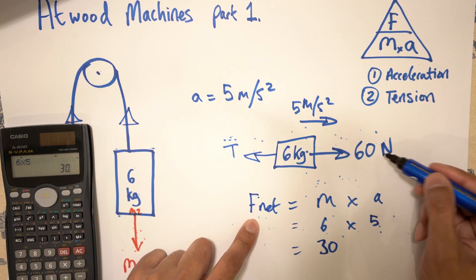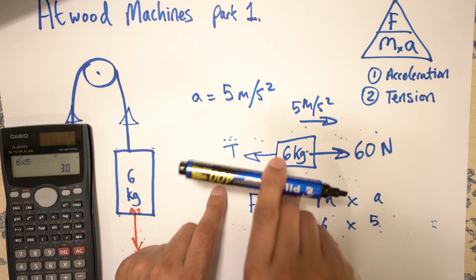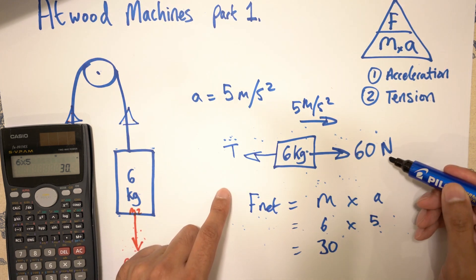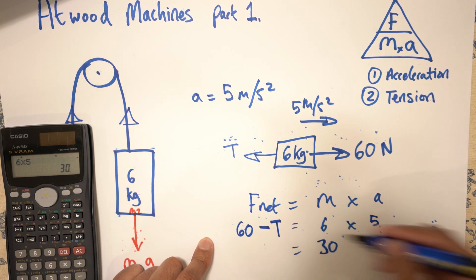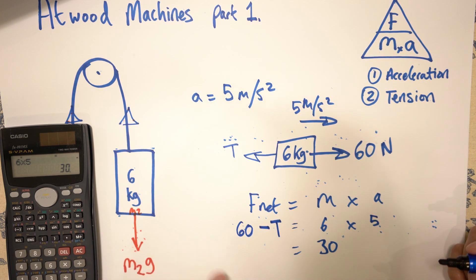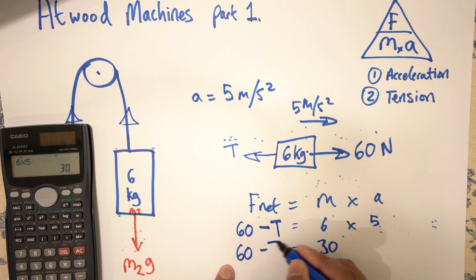And to work out F net now, because it's accelerating in that direction, that 60 is bigger than that T. So you've got to write 60 minus T is equal to 6 times 5. And obviously 6 times 5 is 30. So 60 minus T is 30. Now if you take this T, put it on the other side, it becomes a plus.